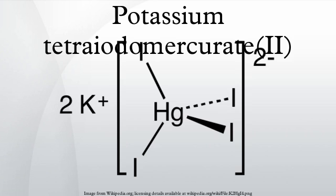Potassium tetraiodomercurate(II) is the inorganic compound consisting of potassium cations and the tetraiodomercurate(II) anion.